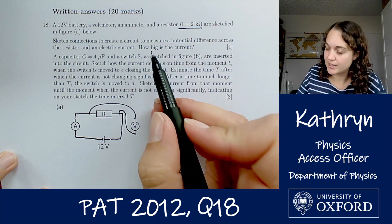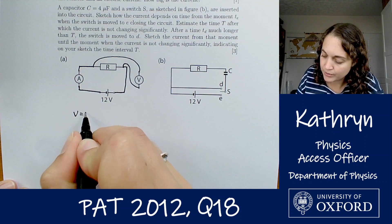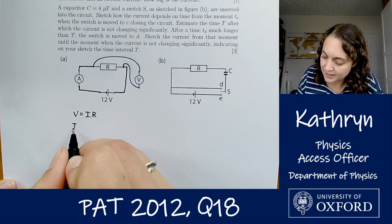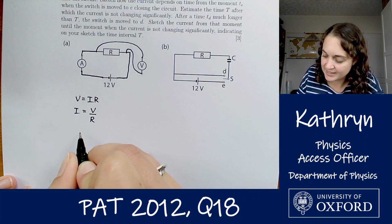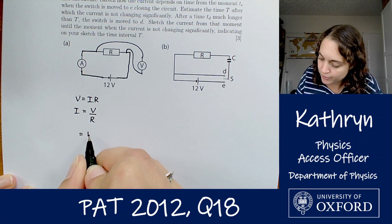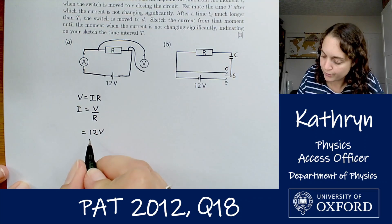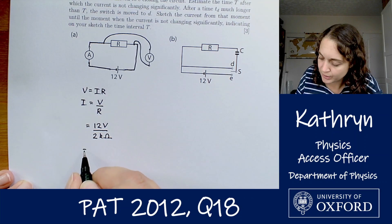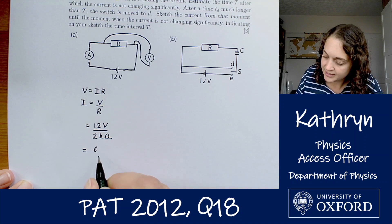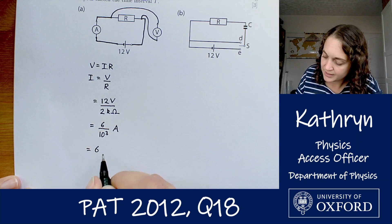We've got a second part to this: how big is the current? Current in a circuit: V equals IR, which means that I equals V over R. The voltage in this case is 12 volts, and the resistance we were told in the question is 2 kiloohms. So we've got 12 volts divided by 2 kiloohms. Taking care of our units, we get 6 times 10 to the minus 3 amps.